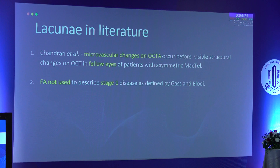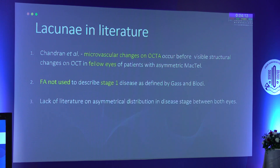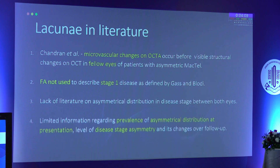None of these literature studies used angiography to describe stage 1 of the disease, as was originally described by Gass and Blodi. There is also a lack of literature on the asymmetric distribution of the disease and limited information regarding the prevalence of asymmetric distribution and disease stage asymmetry between the eyes.